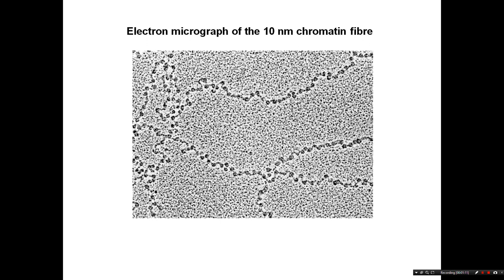Going back to that first level of folding — the 10 nanometer chromatin fiber — here is an electron micrograph picture where each of these little black dots is a nucleosome, and you can see the linker DNA linking the nucleosomes together.